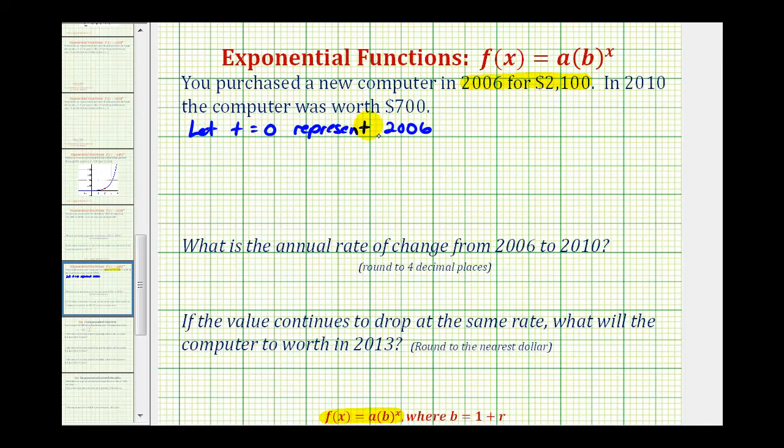And this is a very common procedure when the time is given as a year. It's also very helpful because if t equals zero represents the year 2006, that means f of zero must equal $2,100, which means $2,100 is the initial value, or the value of a.